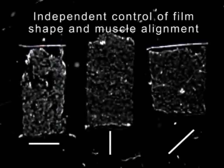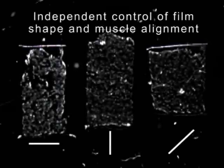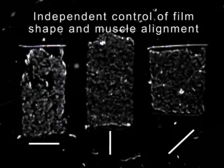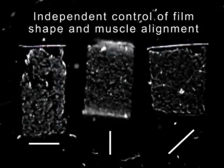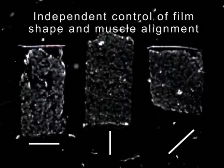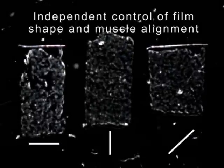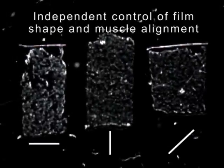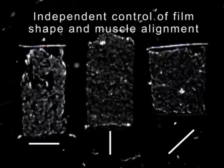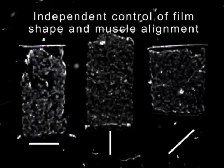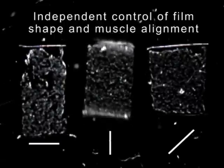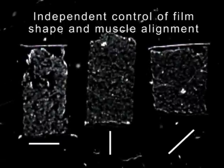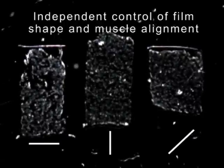This results in independent control of film shape and muscle alignment, allowing us to create muscular thin films that can bend and twist in virtually any direction. For example, rectangles can be engineered to contract along the width, the length, or the diagonal.